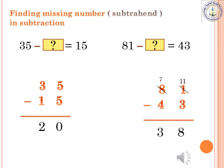Next example: 81 minus dash equals 43. We can use subtraction to find the missing number: 81 minus 43. In the ones place, 1 minus 3 — 3 is more, so borrow from the tens place. The 8 becomes 7 and the ones place becomes 11. 11 minus 3 is 8. In the tens place: 7 minus 4 is 3. So the answer is 38.